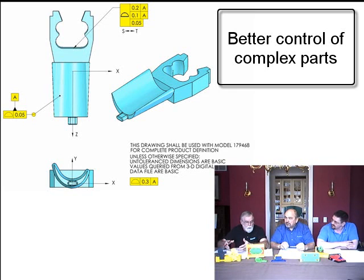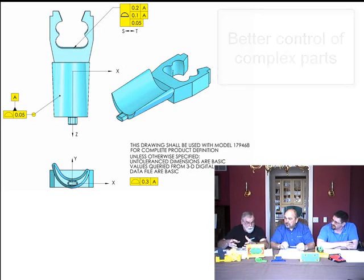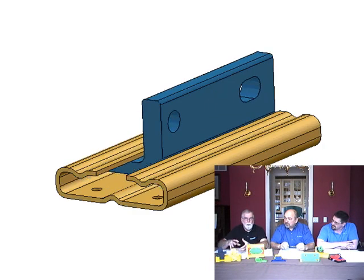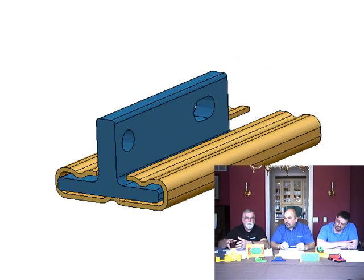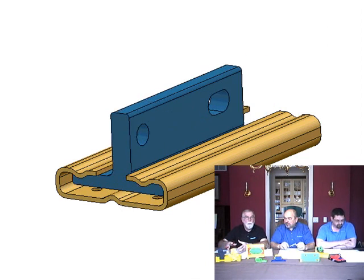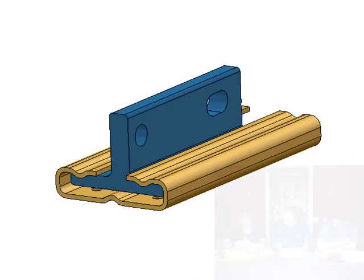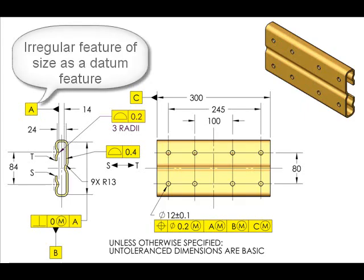So therefore, our standard, Y14-5 in 2009, is trying to accommodate that. We've expanded datums quite a bit, so we can use these irregular shapes, these irregular features, as a datum feature. Like the sheet metal parts, a lot of molded plastic, they don't have regular features of size. That's correct.